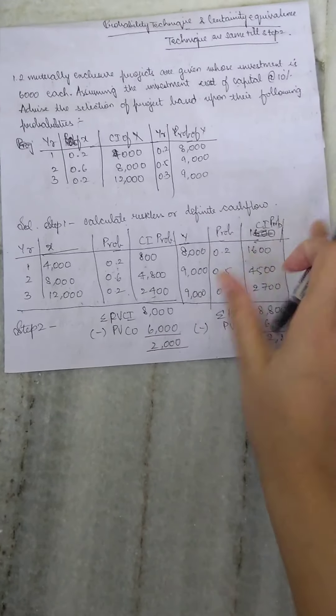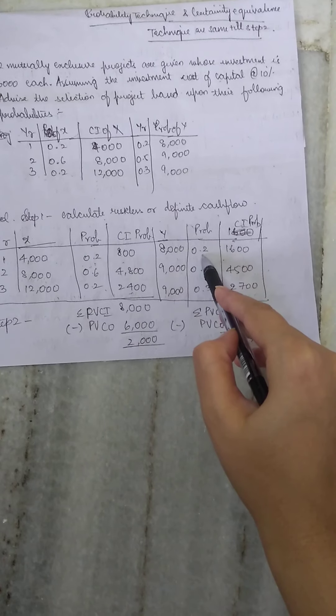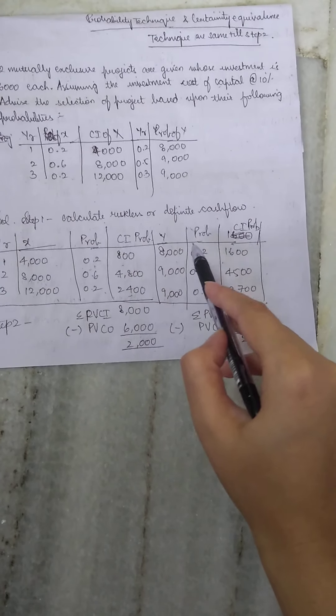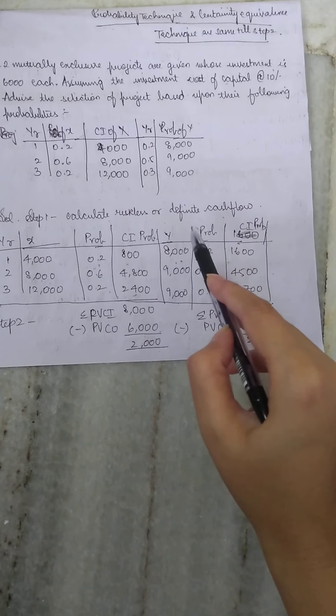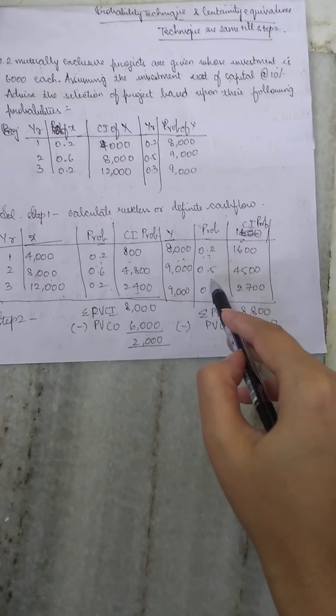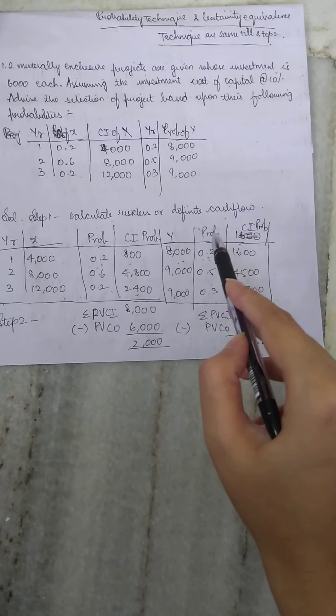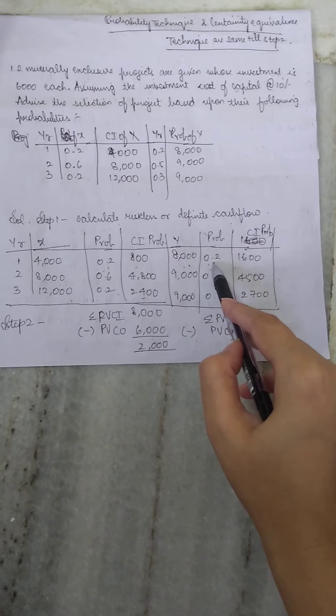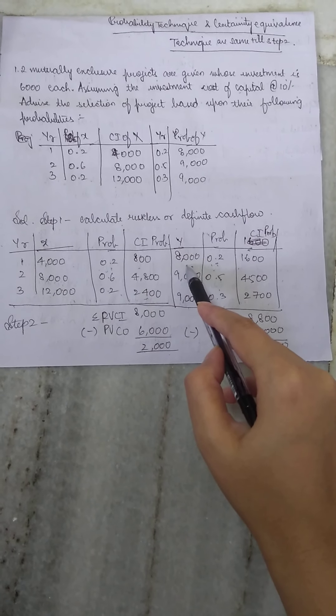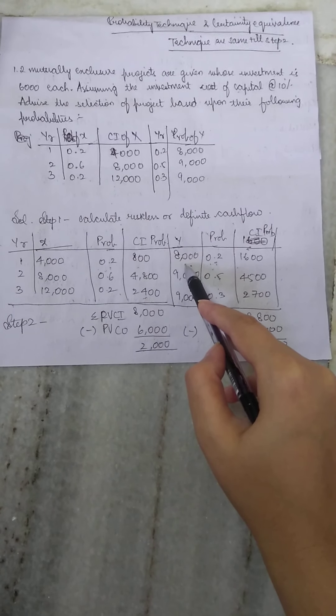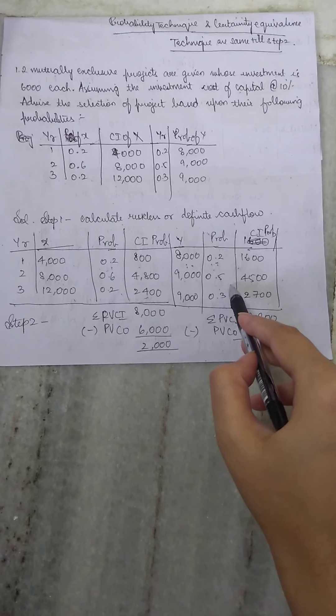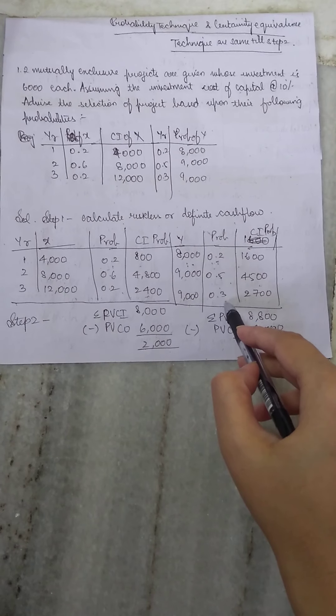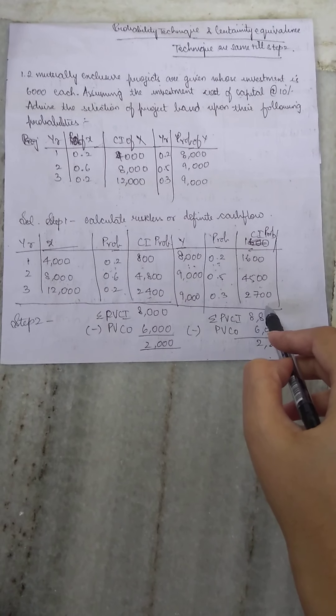Similarly for the Y project, again they are promising to give us at least 0.2, that is 20% of the returns which they have promised. In the worst case scenarios, anything goes wrong, they do not make any profit, profit is 0 for them. Even then they will definitely give us 0.2, that is 20% of the promised amount for the first year, that is 8000 which is equal to 1600. Similarly 9000 into 0.5 is 4500 and 9000 multiplied by 0.3 is 2700.